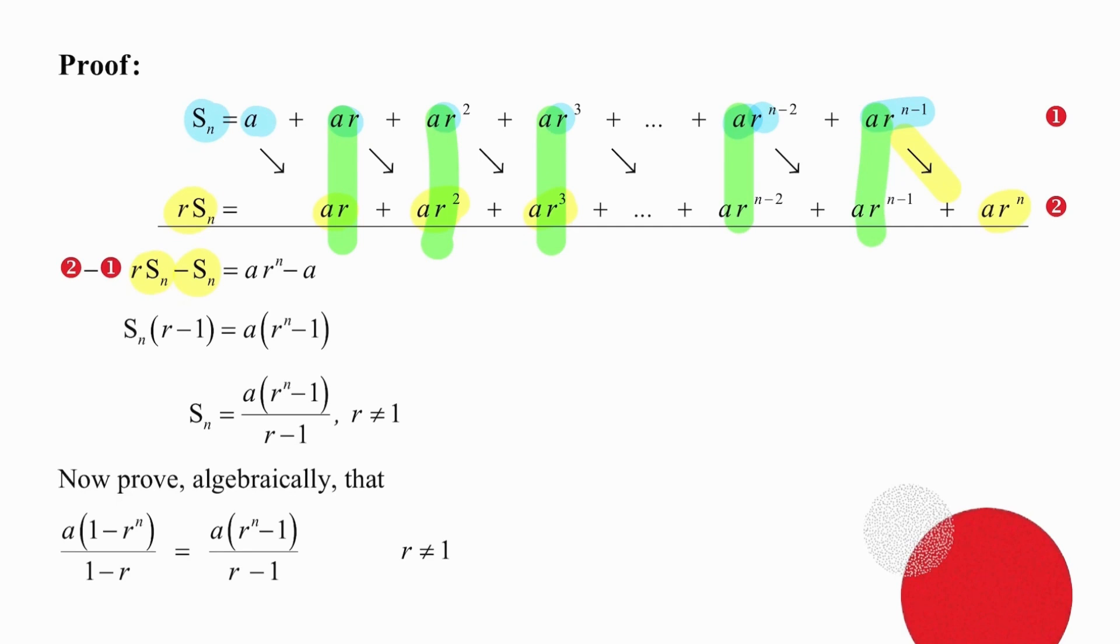On the right, you will notice that we have identical columns for much of the time, but we have two isolated terms. So given that we're subtracting the bottom minus top, we're going to take ar to the n and write it first. And then we are going to take the a value and write it last with a negative in front.